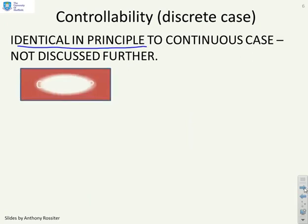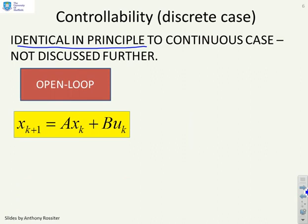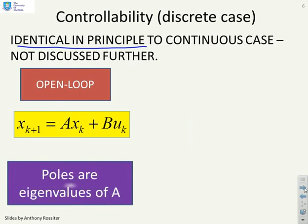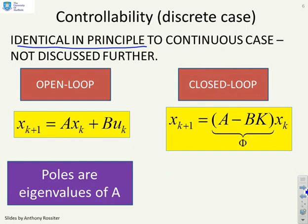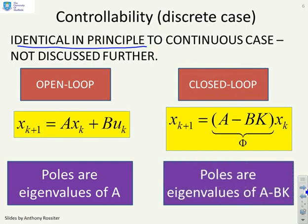If you consider the discrete case, this is identical in principle to the continuous case, so it's not going to be covered much in this series. In the open-loop, you have x(k+1) equals Ax(k) plus Bu(k), and the poles are the eigenvalues of A. In the closed-loop, the poles are the eigenvalues of A minus BK. That's exactly the same insight as for the continuous-time case.